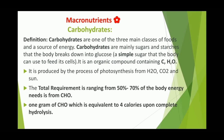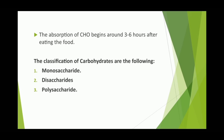Carbohydrates are one of the three main classes of foods and a source of energy. They are mainly sugars and starches that the body breaks down into glucose — a simple sugar the body uses to feed its cells. Carbohydrates are an organic compound containing carbon, hydrogen, and oxygen, produced by photosynthesis from water, carbon dioxide, and the sun. The total daily requirement of carbohydrate is 50–70%. One gram of carbohydrate equals 4 calories. Absorption of carbohydrates begins around 3–6 hours after eating. The classifications are monosaccharides, disaccharides, and polysaccharides.